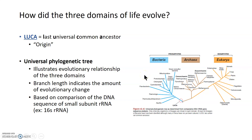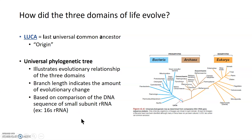The gene they use is the gene that encodes the small subunit rRNA. rRNA is a component of ribosomes, and all cells have ribosomes, which means if you have a cell you have that gene. Ribosomes are made up of two parts: a large subunit and a small subunit. By comparing the rRNA genes between organisms, you can establish their evolutionary relationship.